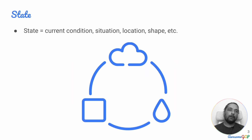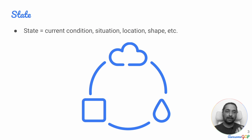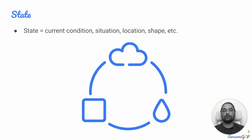The discussion about code that is imperative or declarative has to start with the idea of state. State in general describes what is the current condition, what is the current situation. For certain entities it could be its location, its shape, its temperature, or the number of atoms within it — whatever constitutes a clear definition of what is its current situation would be its state.